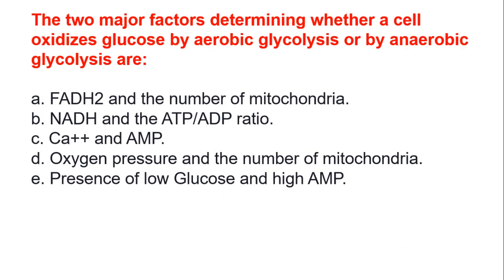The two major factors determining whether a cell oxidizes glucose by aerobic glycolysis or by anaerobic glycolysis are: A, FADH2 and the number of mitochondria. B, NADH and ATP/ADP ratio. C, calcium 2+ and AMP. D, oxygen pressure and the number of mitochondria. E, presence of low glucose and high AMP. The answer is B, NADH and the ATP/ADP ratio.